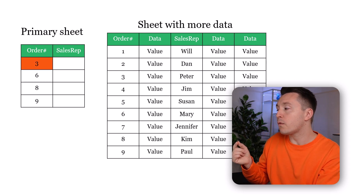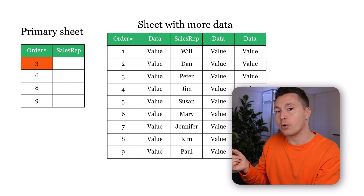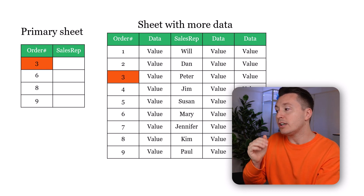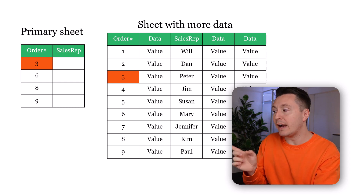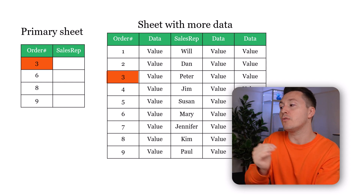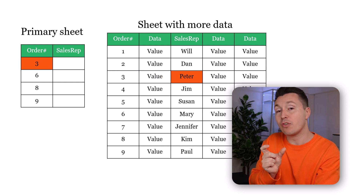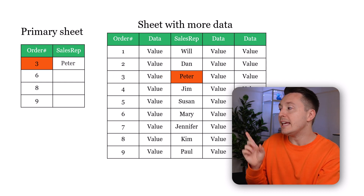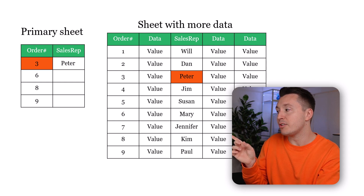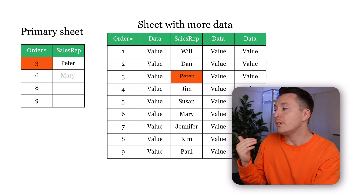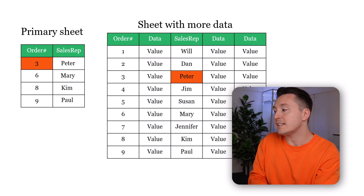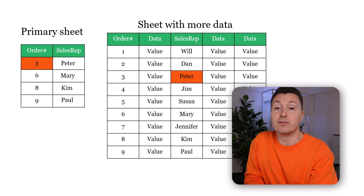VLOOKUP looks for the specific order number from the primary sheet in the order database column, finds it there, then goes to the right into the sales rep column and returns that specific sales representative into the primary sheet. You can then copy down the formula so it does the same for all the different orders.